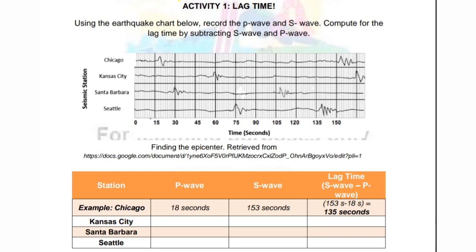Now, let's use the activity in your module as an example. We have activity one, lag time. Using the earthquake chart below, compute for the lag time by subtracting S wave and P wave. As you can see, we have four records of earthquake in four seismic stations. We have Chicago, Kansas City, Santa Barbara, and Seattle. Below are the time of arrival: 0, 15, 30, 45, 60, 75, 90, 120, 150.